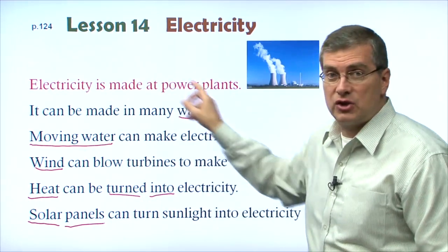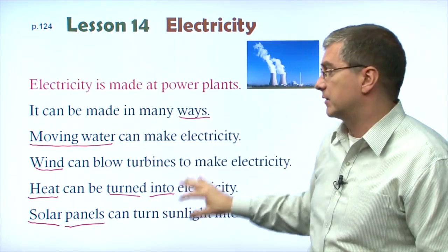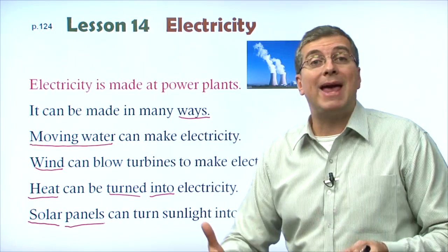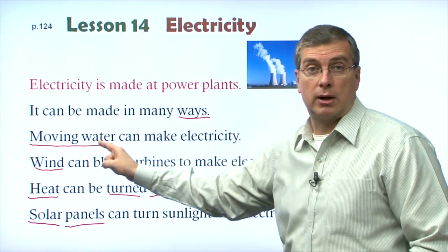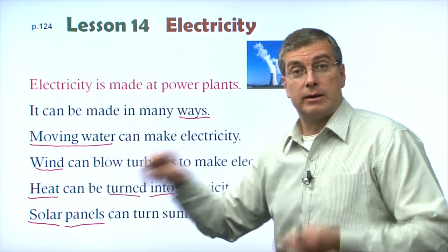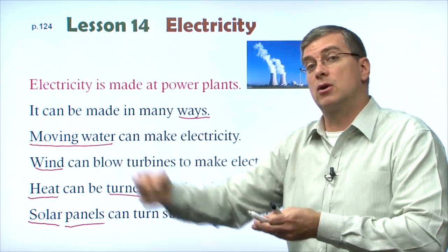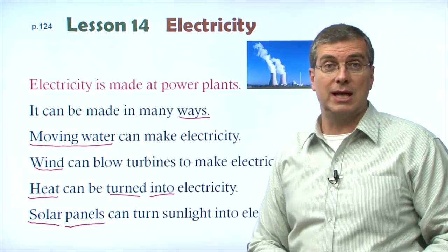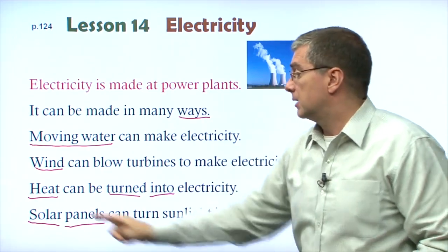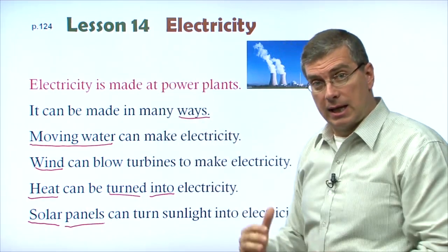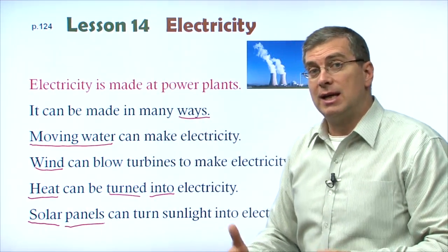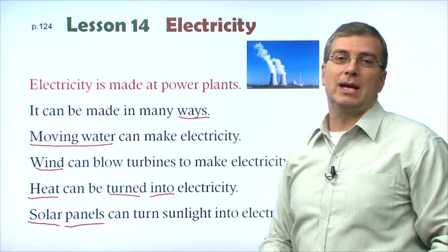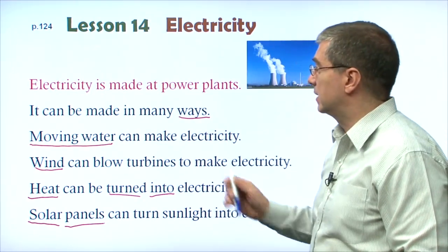So in this passage — this short paragraph — there are four ways that we can make electricity. The first way: moving water. The second way: wind — the motion of the wind makes the turbines go round. The third way is heat — heat can be turned into electricity. And the fourth way: solar panels — using sunlight to turn that energy into electricity.